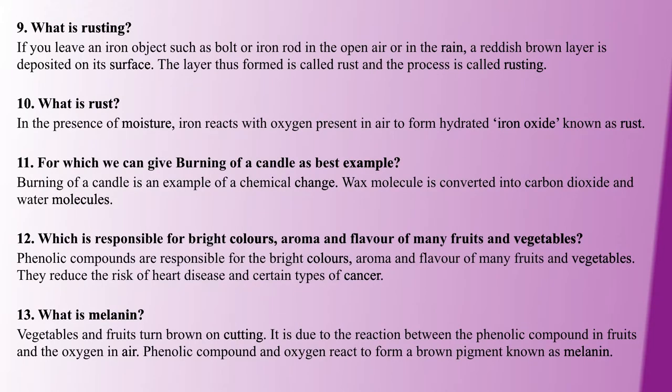Next: what is rusting? Rusting involves iron. This is an iron object, like a bolt or iron rod, exposed to open air or rain. A layer deposits on it. This layer is rust. This process is rusting — we will have iron undergo this process.